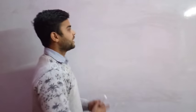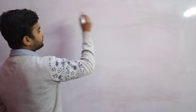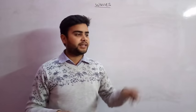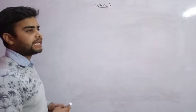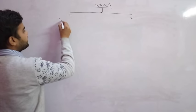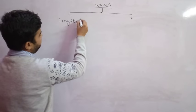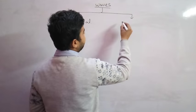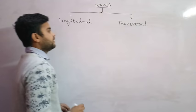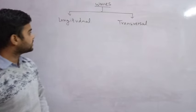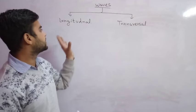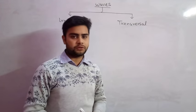Hello students, welcome back to Physics Live. In this module we will discuss about waves. I have told you in the previous video what waves are, and in this video I will show you how many types of waves there are. There are only two types of waves: the first is longitudinal and the second is transversal.